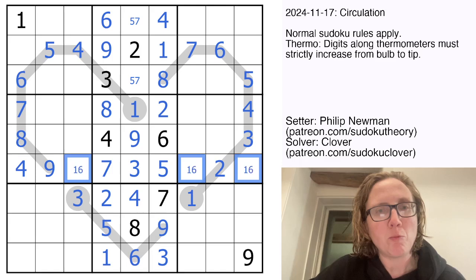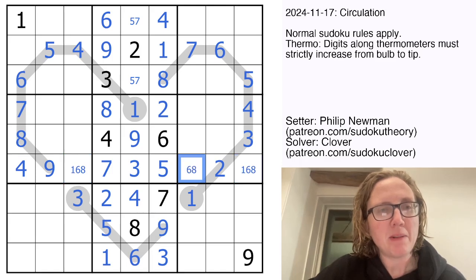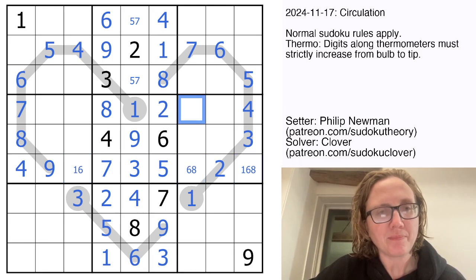In this row I need a one a six and an eight, that can't be a one, that cannot be an eight, and I can't quite finish that row yet so we'll leave that be for now.